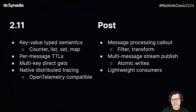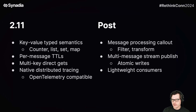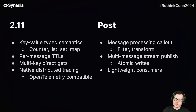Another one is per-message TTLs. Today, within a stream or a KV bucket, you can only set a single TTL value that applies to the entire bucket. So if you set five seconds, every key-value pair will eventually be auto-deleted after five seconds. This feature provides the ability to set an individual TTL on a per key-value pair basis.